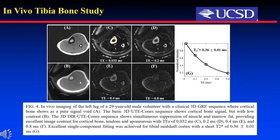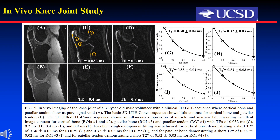This figure shows the in vivo tibial results. The DIR-UTE-CONES sequence shows high signals from the cortex of the tibial mid-shaft with near-zero signals from both muscle and marrow fat. Tendons and coil elements also show as high signals. The in vivo knee results show high signals from femur, tibial, and patellar bones and tendons, with near-zero signals from both muscles and marrow. Excellent fittings are also obtained for these short T2 components.